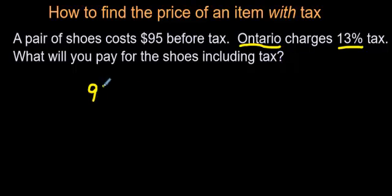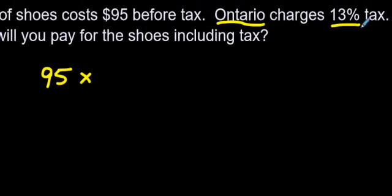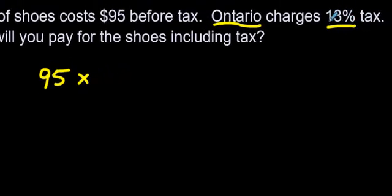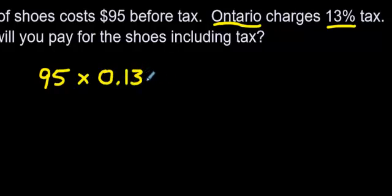Start by writing $95 down. And assuming you've watched the videos on how to change a percent into a decimal, I'm going to jump right in to doing that right now. We're going to change 13% into a decimal. What that means is you're moving the decimal over two places to the left, so you end up getting 0.13. 13% as a decimal is 0.13.